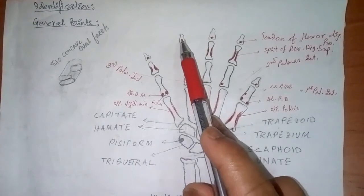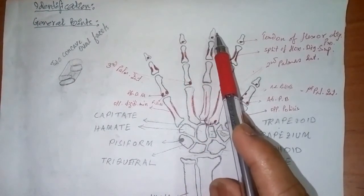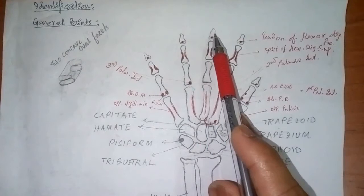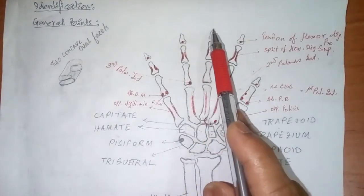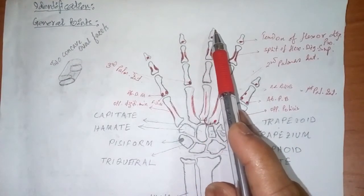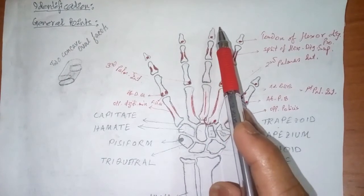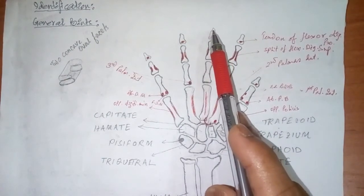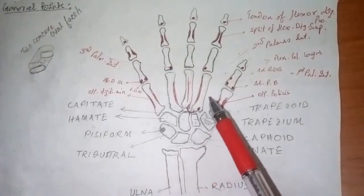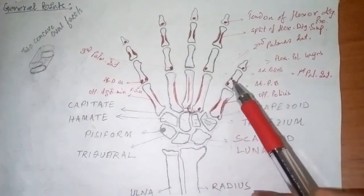But in the distal phalange, as you can see here, the head is non-articular. It is not articular, that is why it is not pulley-shaped. Now talking about the insertions of the muscles.